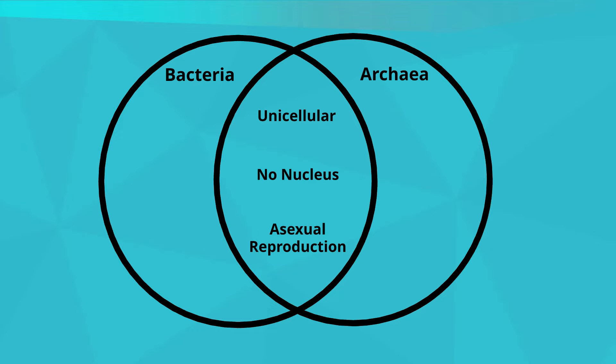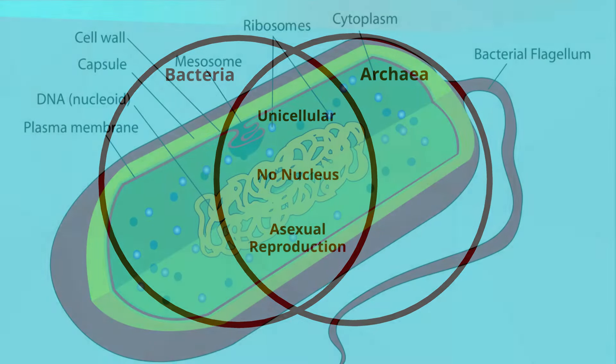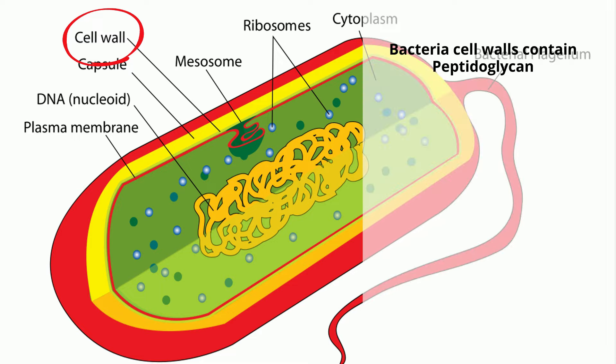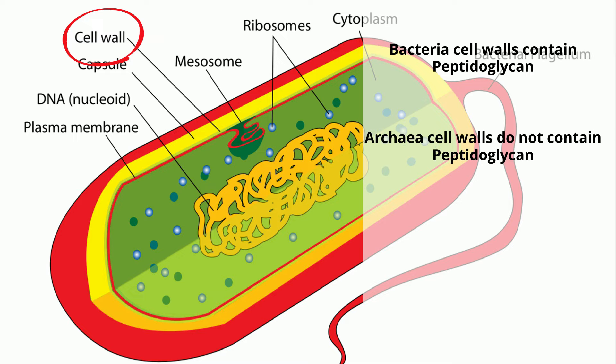However, there are some important differences. First, the cell walls of bacteria and archaea are different. Bacteria cells have walls that contain peptidoglycan. Archaea cells do not contain peptidoglycan in their cell wall.